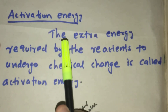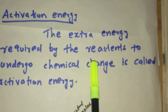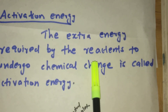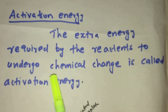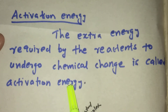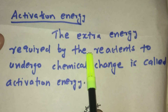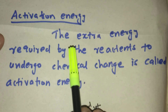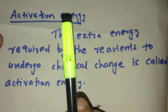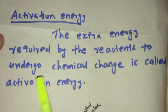The extra energy required by the reactants to undergo chemical change is called activation energy. It is the extra energy we add to reach the effective collision energy — that is, to reach the threshold energy — and that is called activation energy.